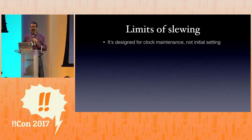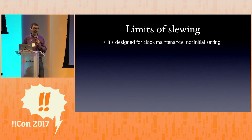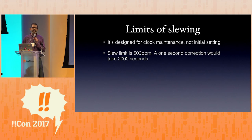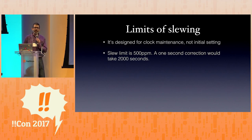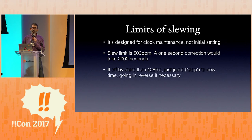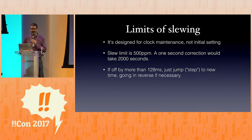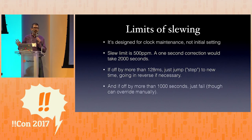But there are limits of slewing, because NTP is really designed for clock maintenance, not the initial setting. If I buy a brand new computer and plug it in, it has no idea what time it is. And if it was off by a lot, it's going to take decades to catch up because the limit of slewing is 500 parts per million. So if it's off by more than 120 milliseconds, it just jumps to the correct time, even if it has to go in reverse — the thinking is it's better to do that than have your clock be off for 40 minutes or two weeks or three years. And if you're off by more than a thousand seconds, NTP just says no — though you can override that manually for that initial setup when you first plug in your computer.